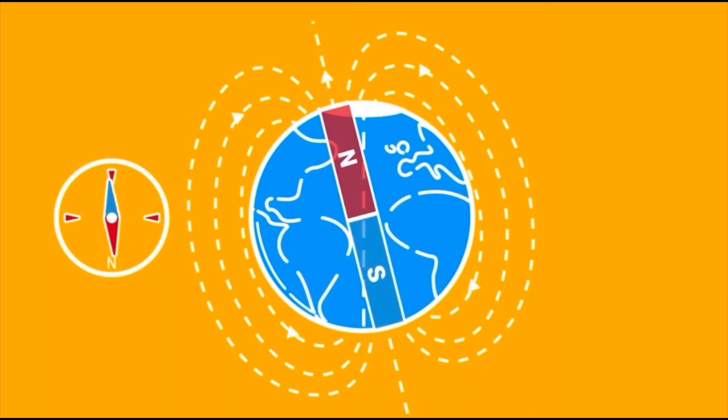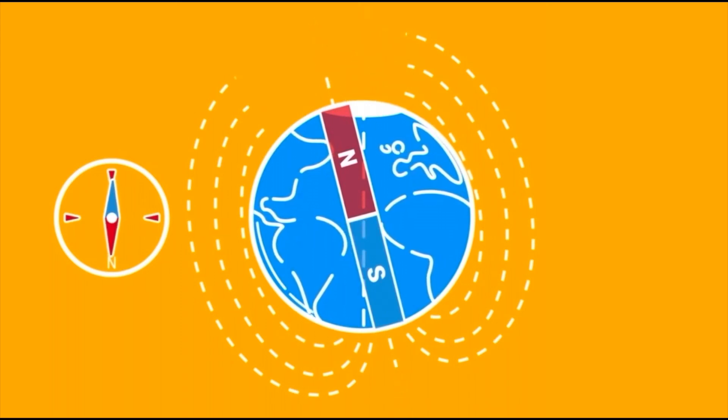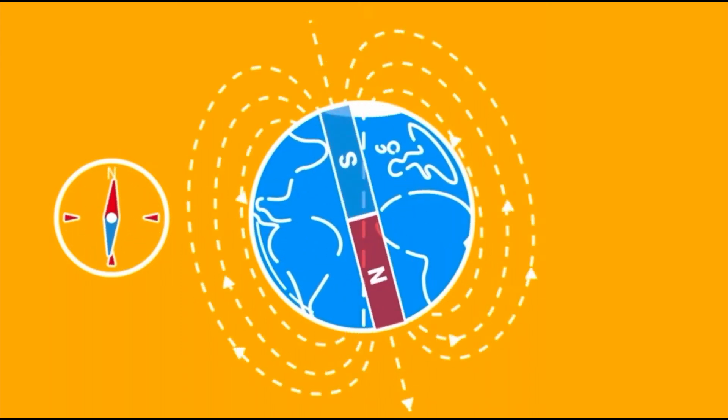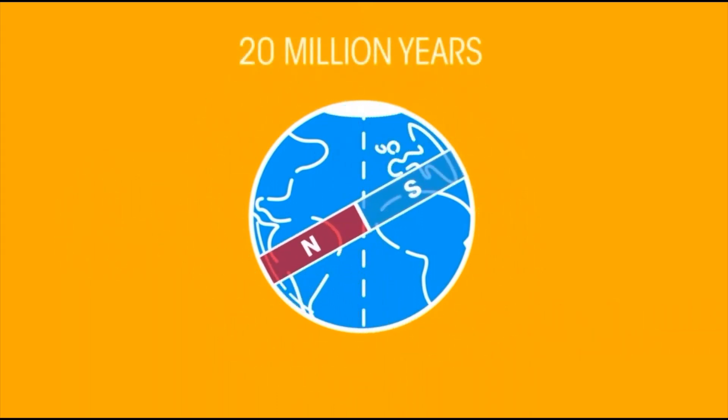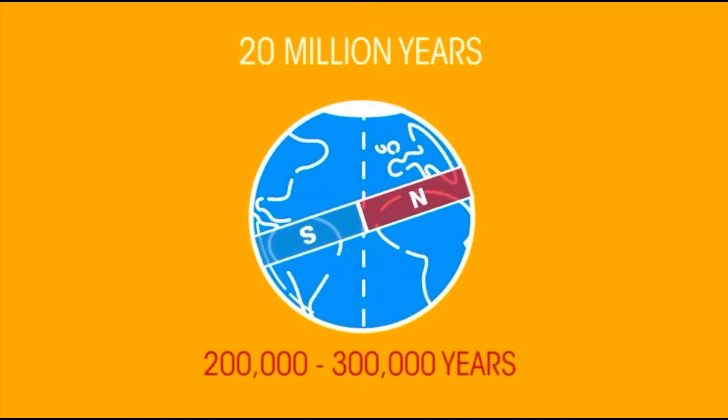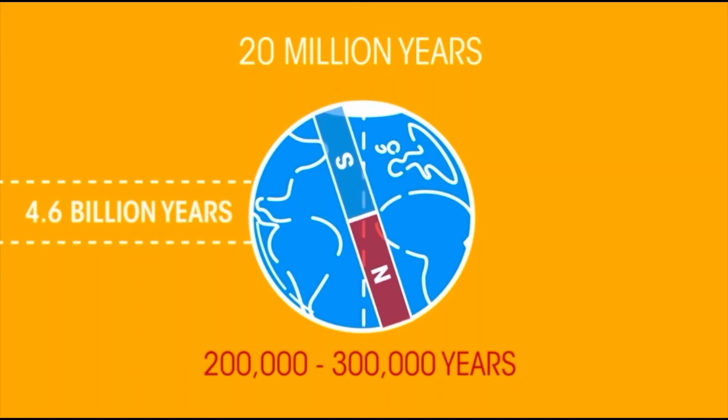Interestingly every two to three hundred thousand years the magnetic poles of the earth shift. So much so that it's happened several times over the last 20 million years given that the earth is a little over four billion years old.